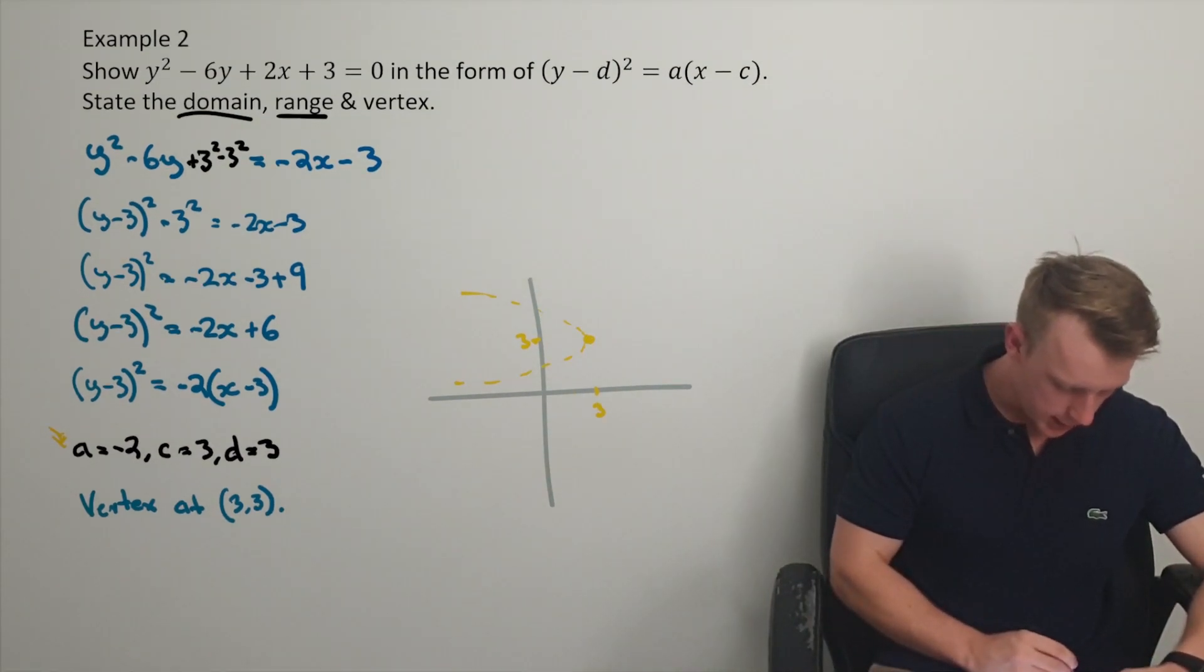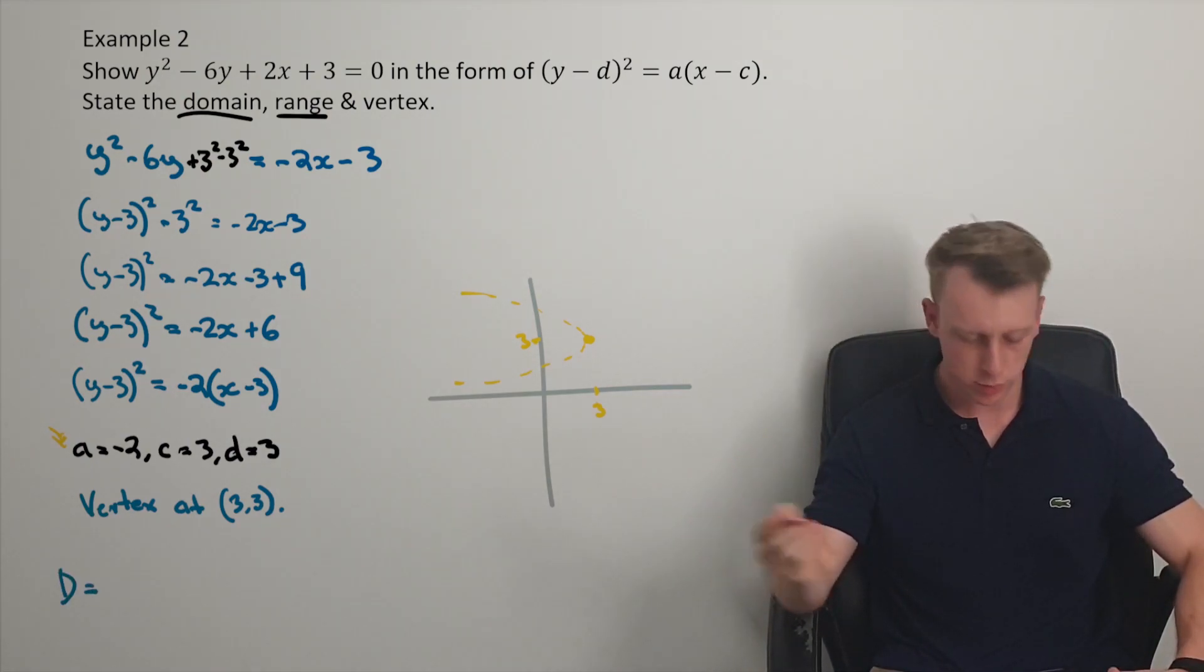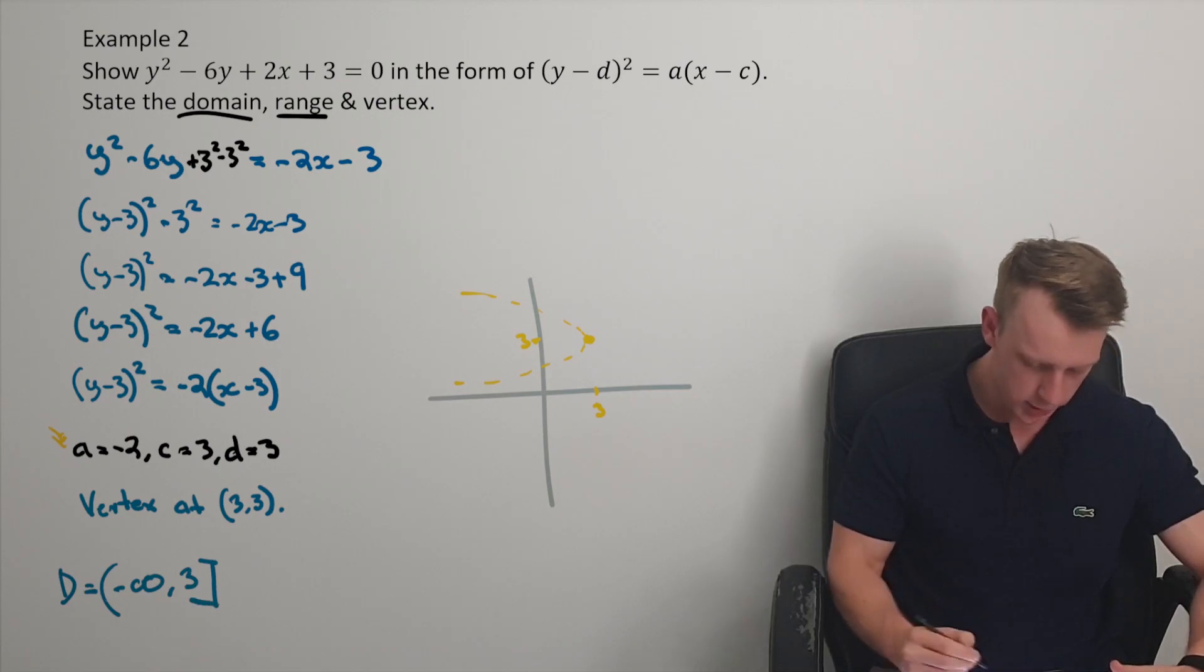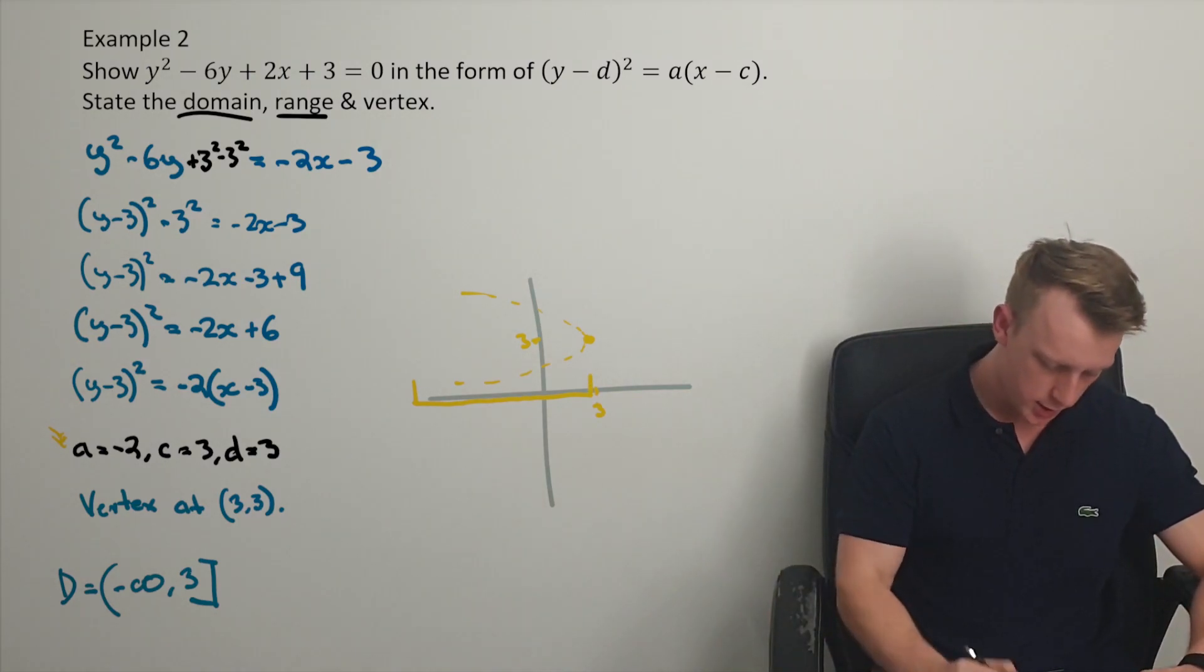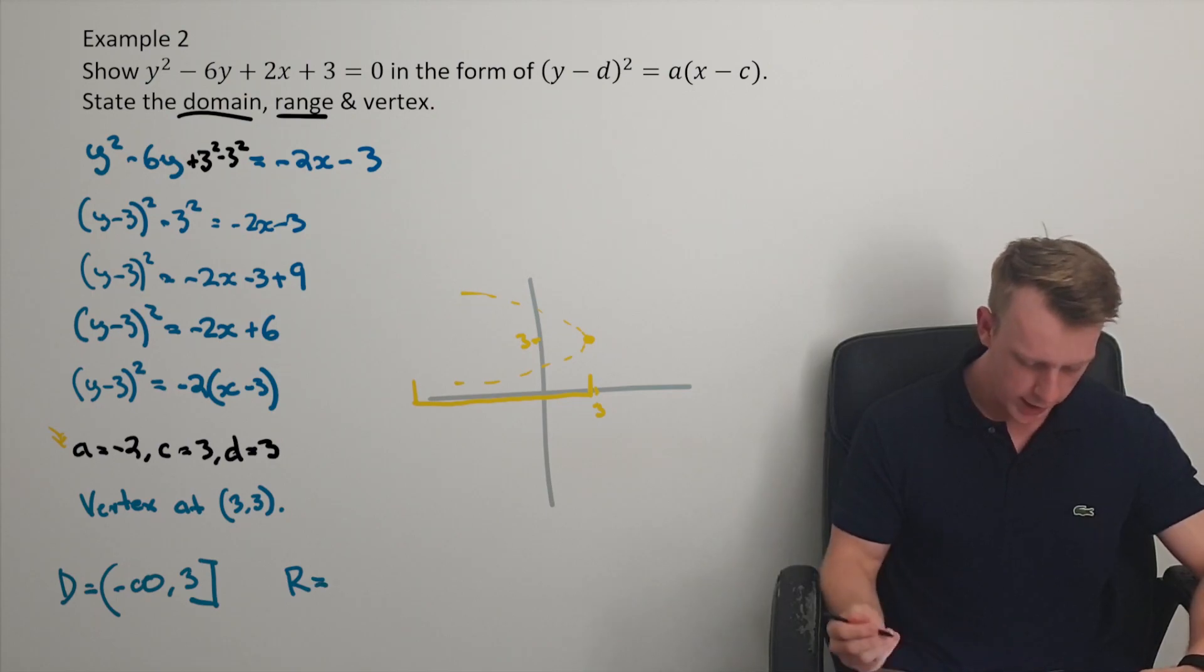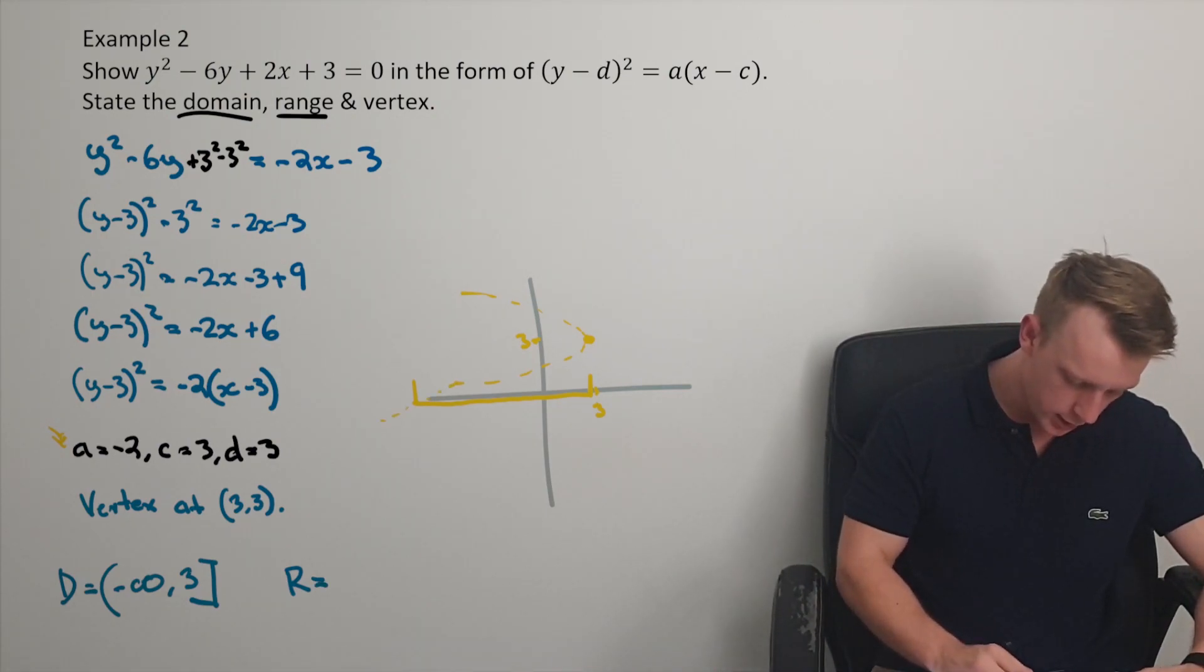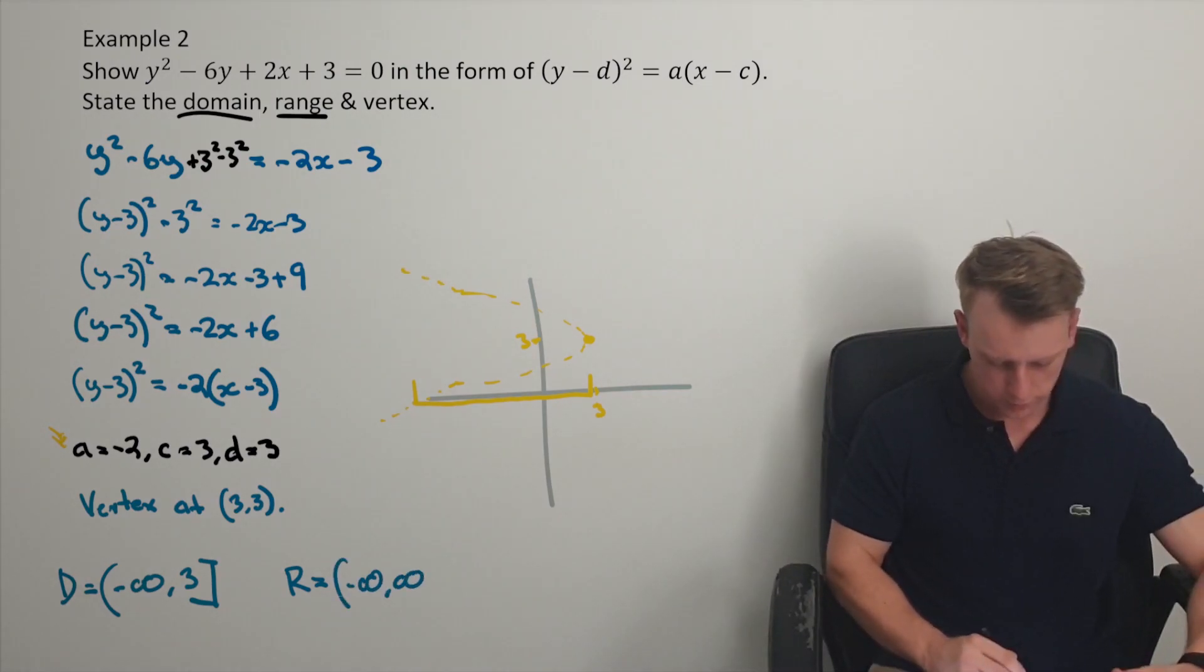Well, I would say that the domain is a bit restricted here. Those are my input values. I will be able to put in from negative infinity all the way up to 3, including it, because that's all the way up to this vertex point. Negative infinity, all the way up to 3, inclusive. We've also got the range. Well, this behavior will go down along forever, and this behavior will go up along forever. So the range will be negative infinity to positive infinity.